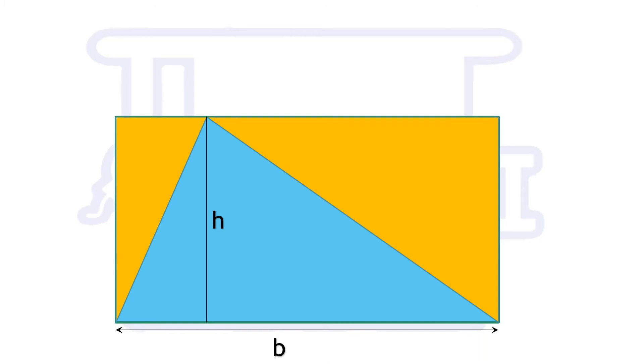If inverted duplicates of these triangles are also placed inside the rectangle then it is completely filled, which means its area is double of the triangle. Hence the area of triangle is half of rectangle.